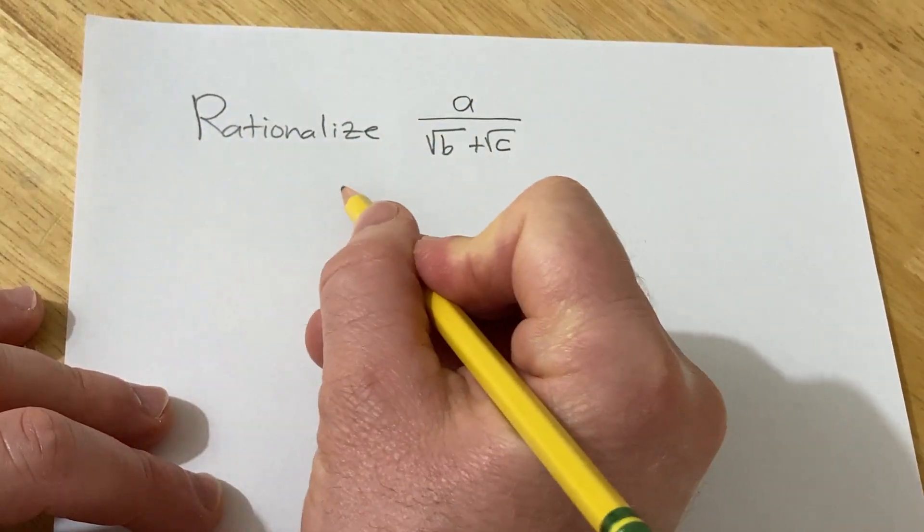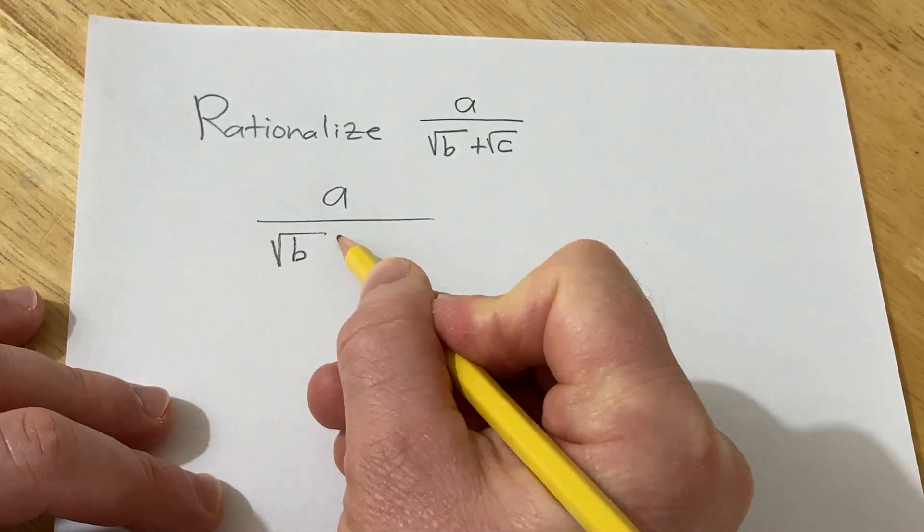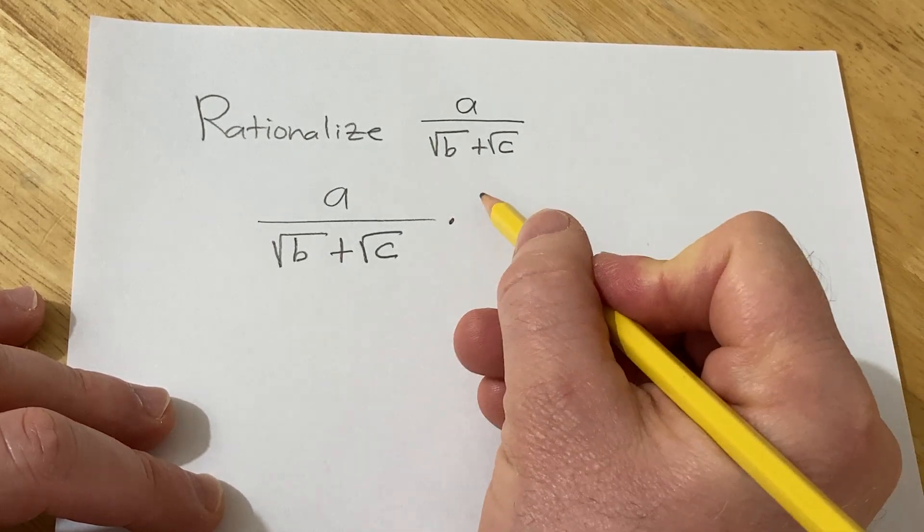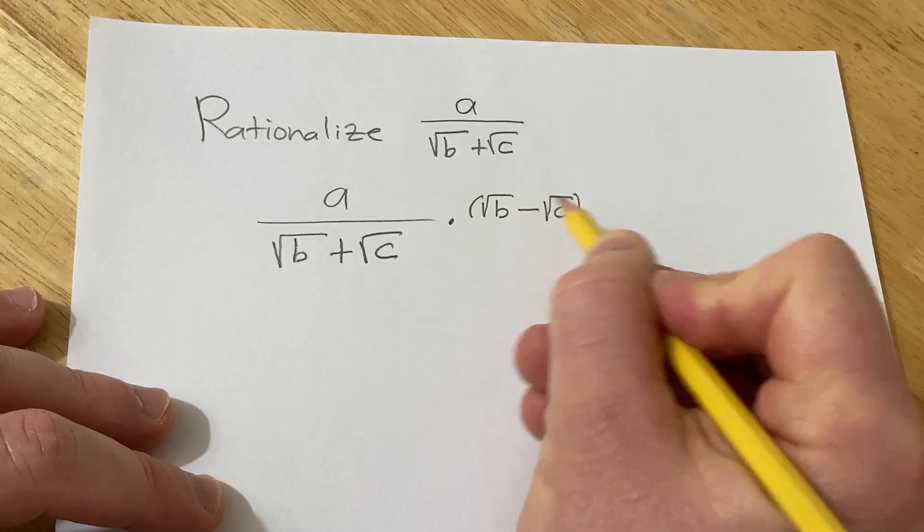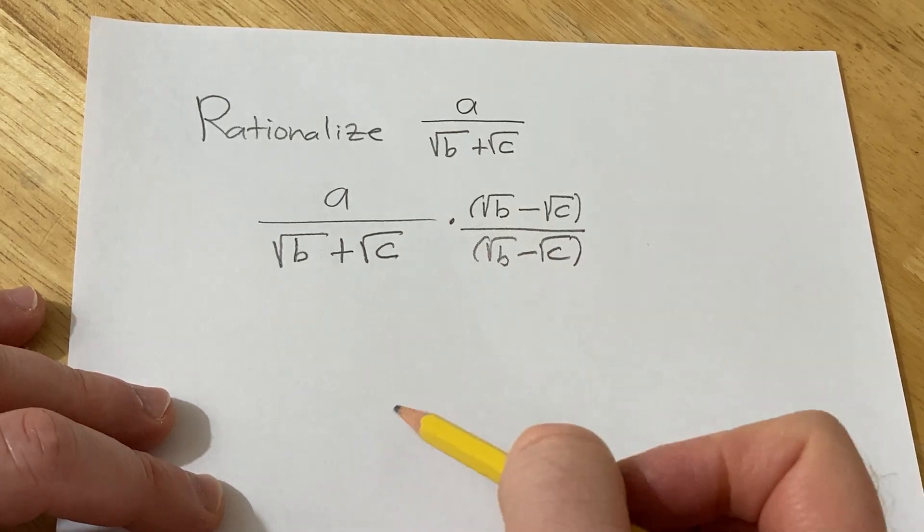So basically, we'll start by writing it down again. a over the square root of b plus the square root of c. And so the third conjugate will simply be the square root of b minus the square root of c over the square root of b minus the square root of c. So all you have to do is switch the sign.